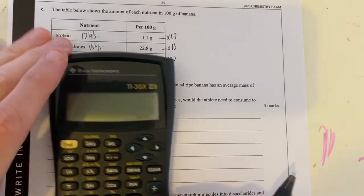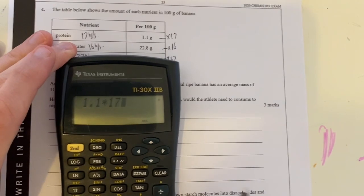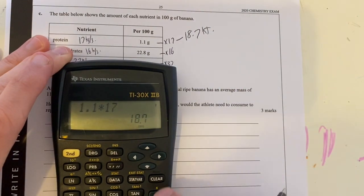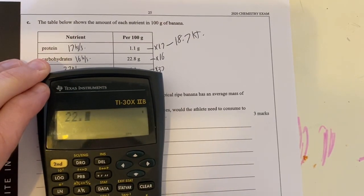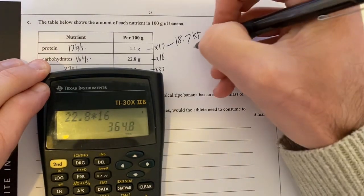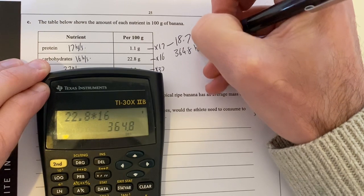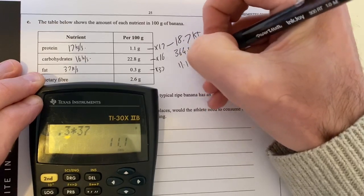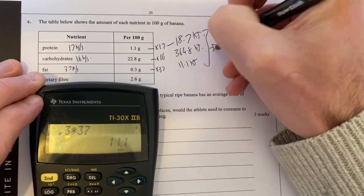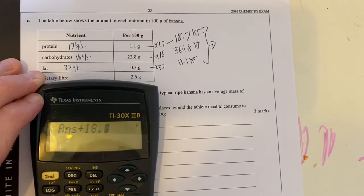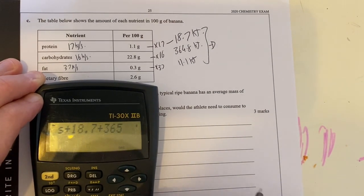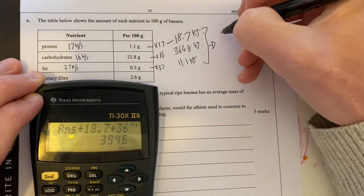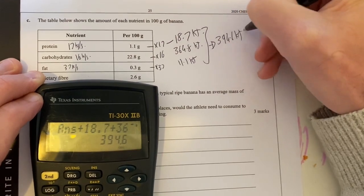1.1 times 17 gives me 18.7 kilojoules. Then 22.8 times 16 gives me 364.8 kilojoules. And 0.3 times 37 gives me 11.1 kilojoules. If I add all these up: 18.7 plus 364.8 plus 11.1 gives me 394.6 kilojoules per 100 grams.